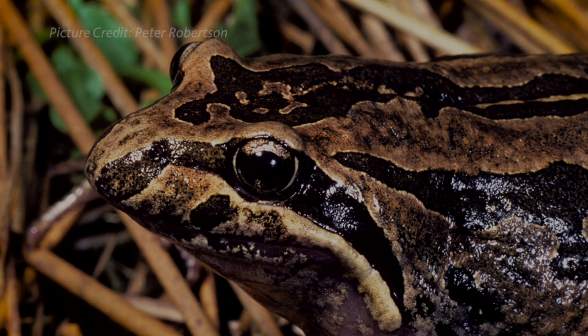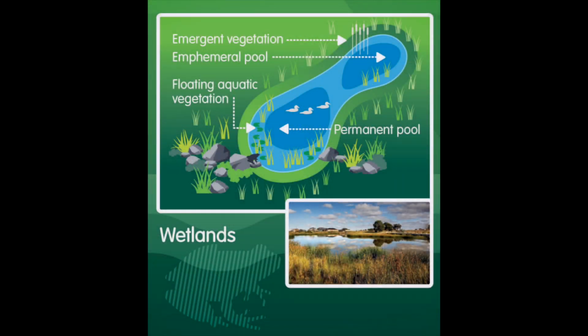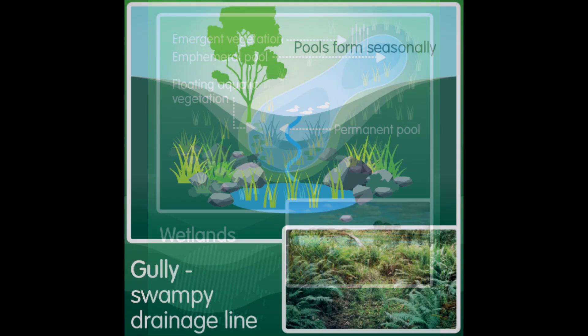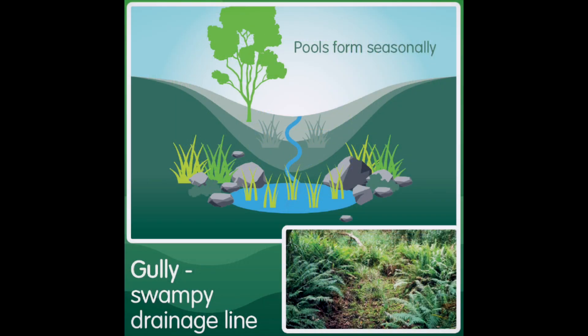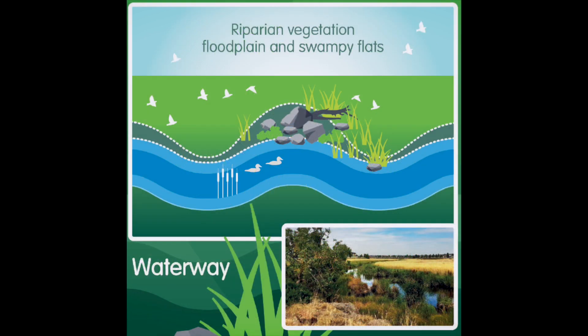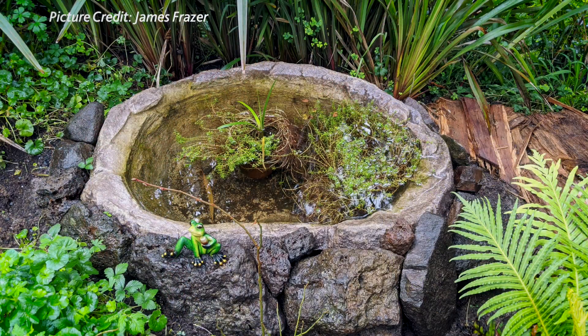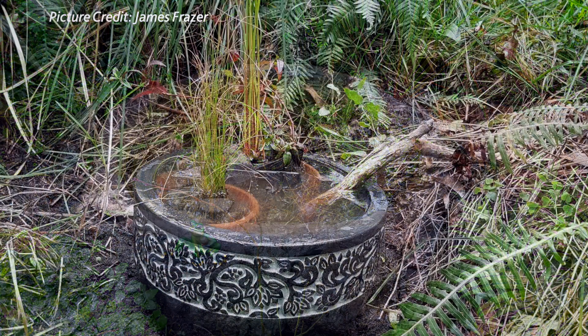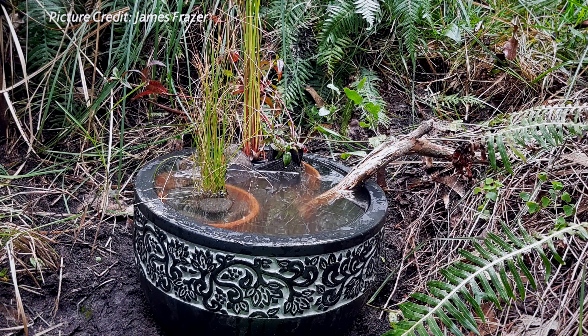Examples include wetlands, both seasonal and permanent, boggy drainage lines that flood during wetter months, and creeks and rivers with calmer backwaters. Frogs can also be found in human-made environments such as ponds, farm dams, stormwater wetlands, and even old backyard containers that catch rain.